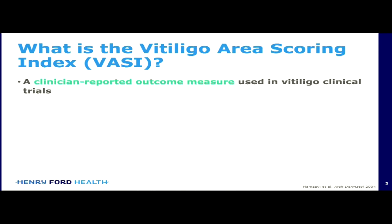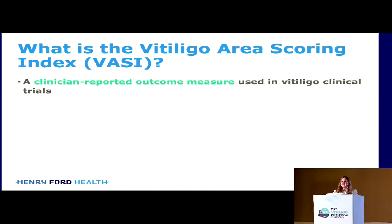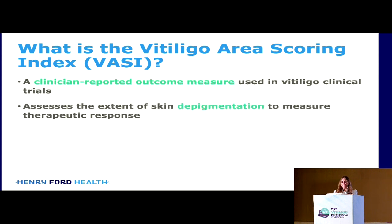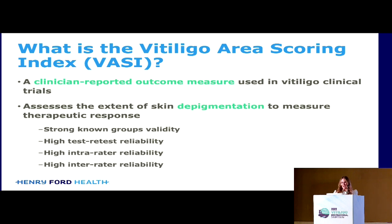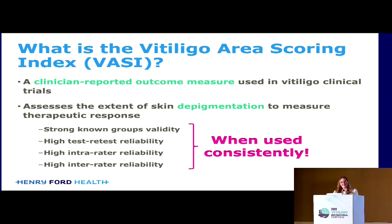Let me introduce you to the VASI. It's a clinician-reported outcome measure used in vitiligo clinical trials, and it assesses the extent of depigmentation in the skin to measure the therapeutic response. It has a very strong track record, but only when it's used consistently between every study and all the raters. We must do this right — otherwise, we're measuring the difference in the outcome measure and not the measure of the therapy itself.